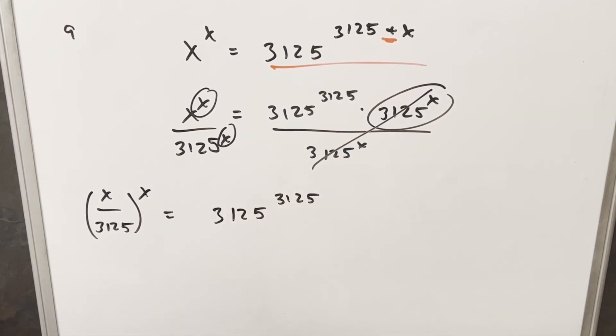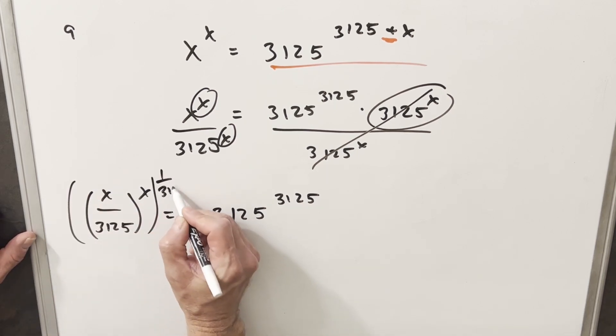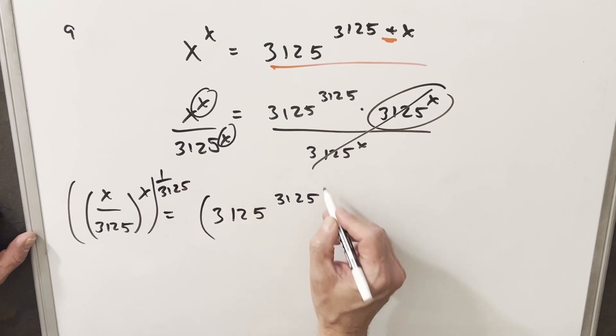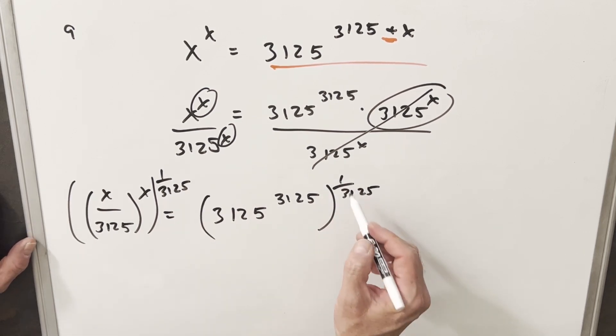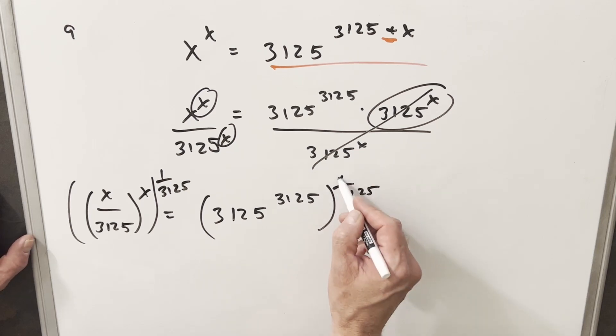And this setup is actually pretty nice because what it's going to allow me to do if I raise both sides to the 1 over 3125 power, the beauty of that is here it's just going to cancel, because if you distribute this in you just get 1. So I'm going to cancel that piece.